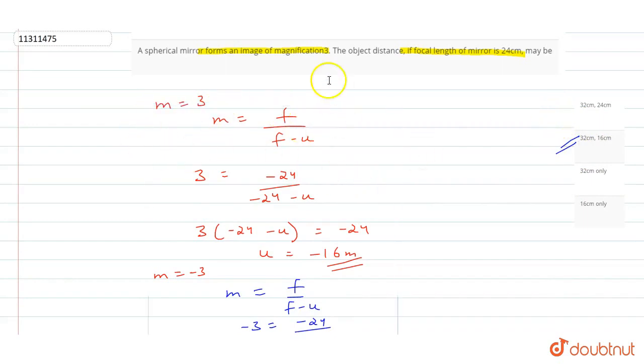So remember, for spherical mirror magnification, M is equal to f upon f minus u. That is our solution.